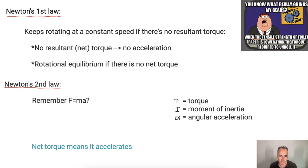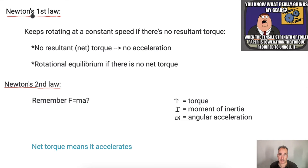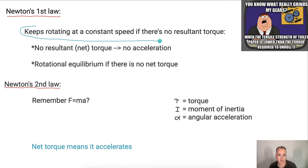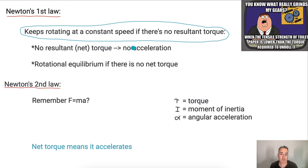Let's look at how torque relates to Newton's first law. Newton's first law says in linear terms that an object in motion tends to stay in motion unless acted on by a net force. Well, if something is rotating, it'll rotate at a constant speed if there's no resultant torque. So if there's no net or resultant torque, that means there must be no angular acceleration.